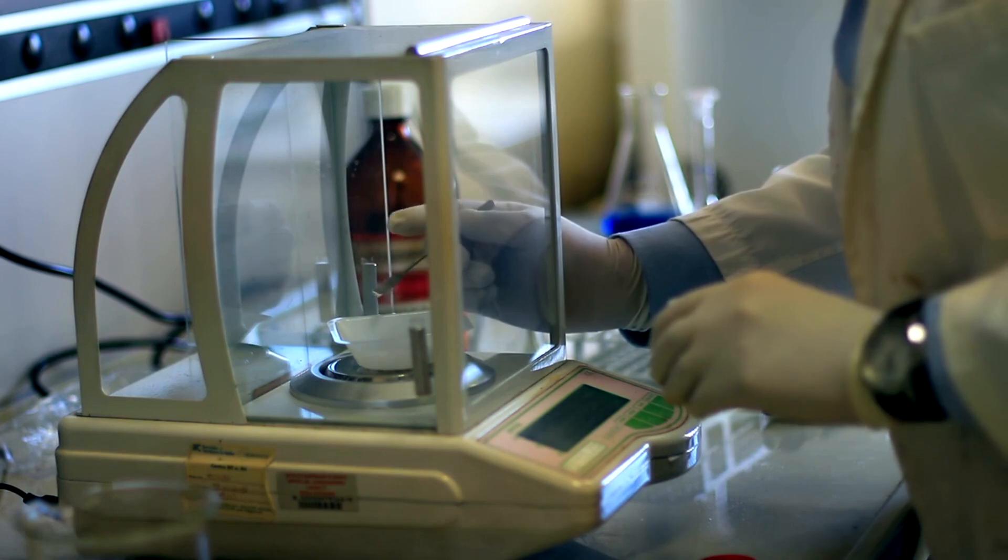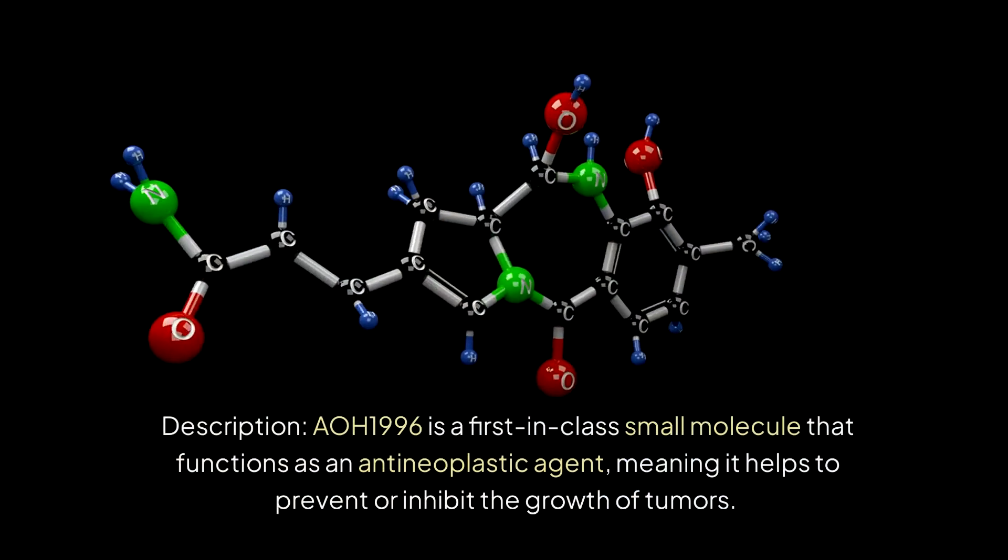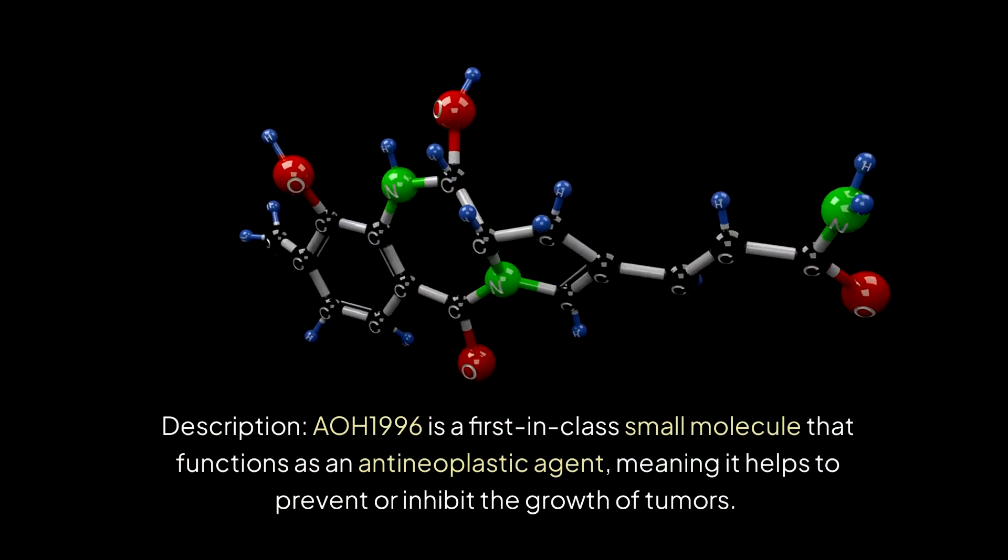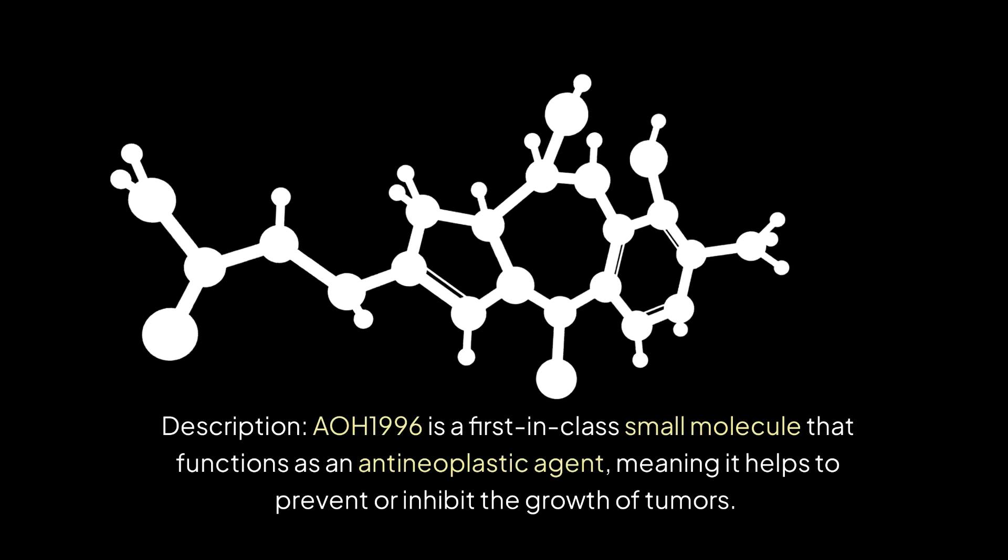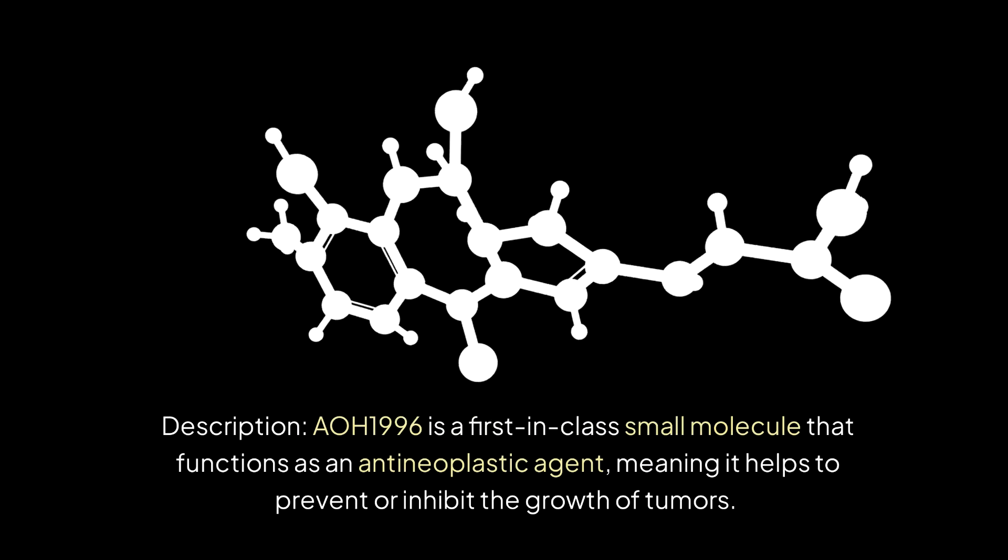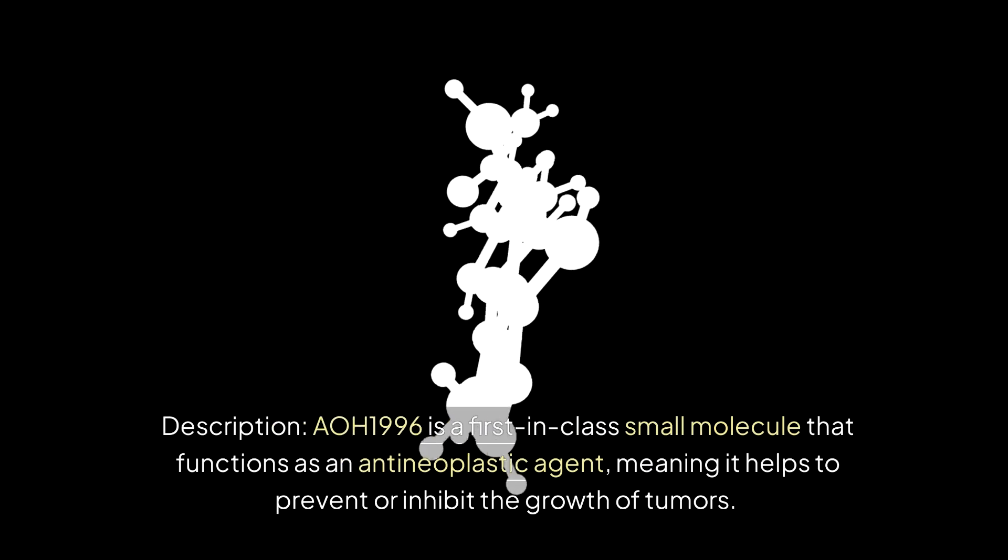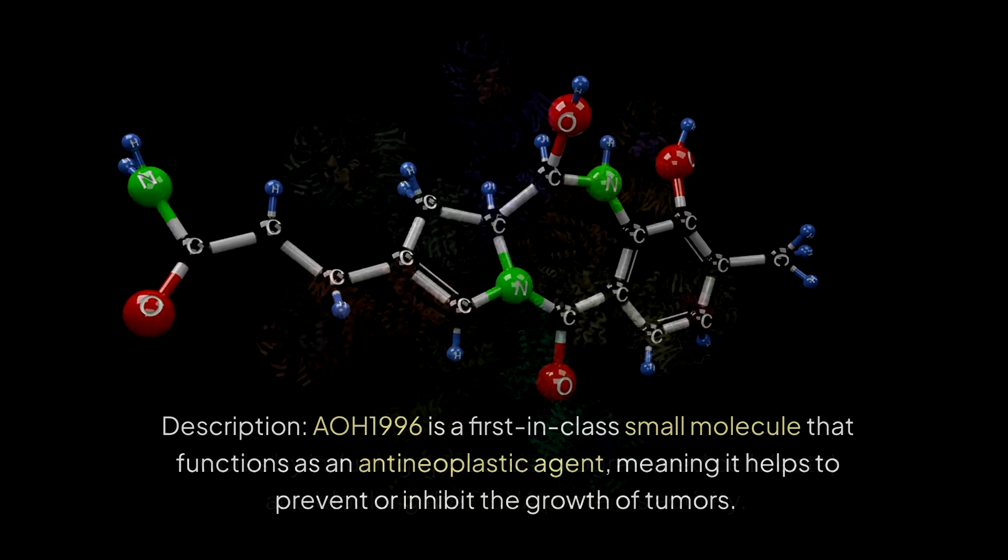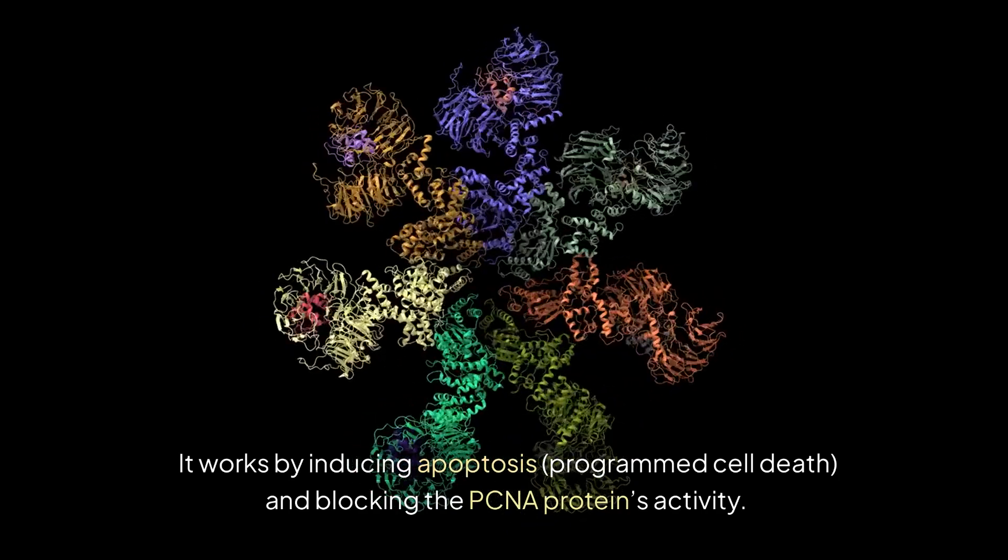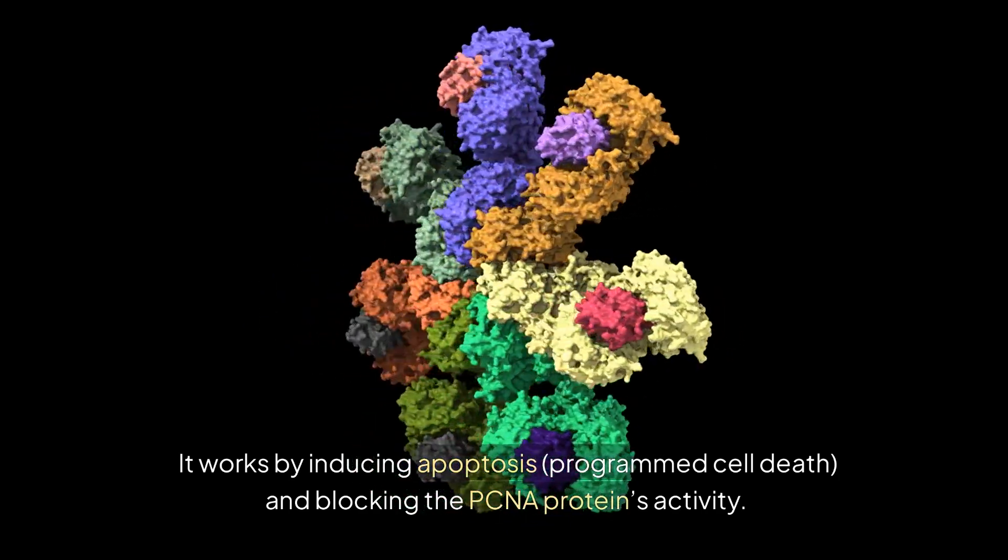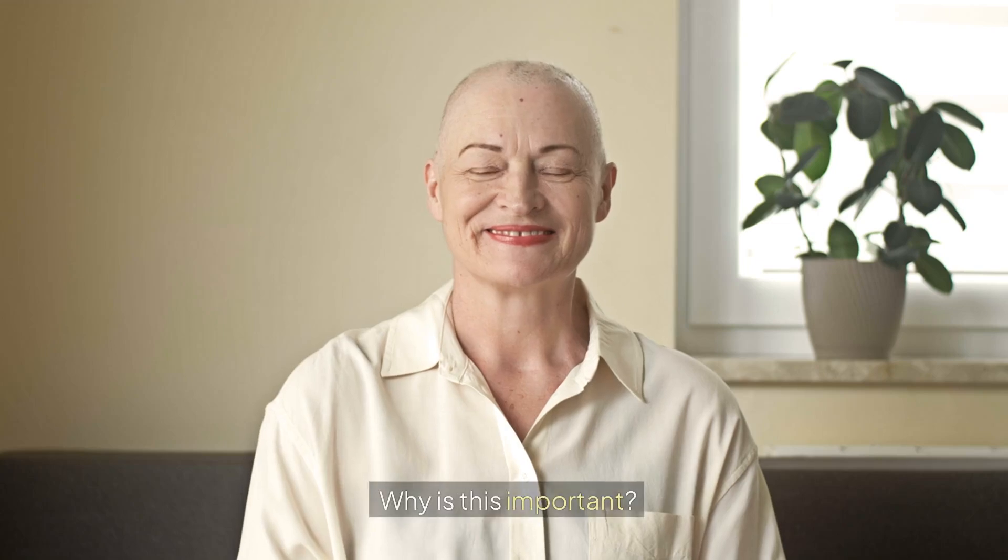Description: AOH1996 is a first-in-class small molecule that functions as an antineoplastic agent, meaning it helps to prevent or inhibit the growth of tumors. It works by inducing apoptosis (programmed cell death) and blocking the PCNA protein's activity. Why is this important?